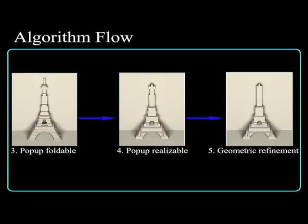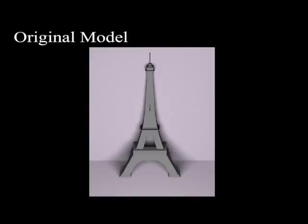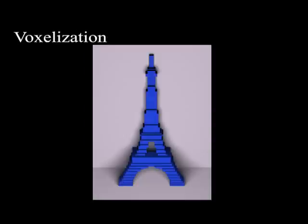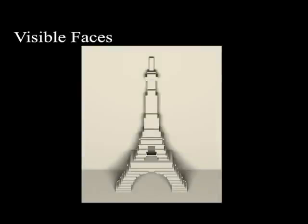The main steps are: We first compute an initial parallel piecewise linear surface approximating the input model. It consists of orthogonal faces on a Cartesian grid.